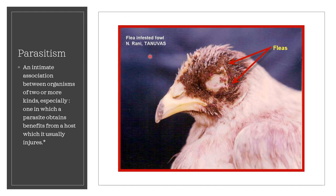An example of parasitism is the flea-infested fowl. The flea is the parasite, and the fowl is the host. This is considered parasitism because there is an intimate relationship between the flea and the fowl, the flea lives at the expense of the host, the parasite is metabolically dependent on the host for survival and food, while the host is being harmed or injured.